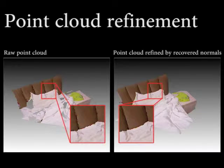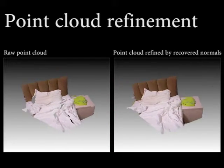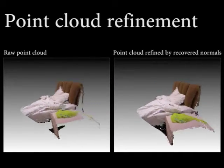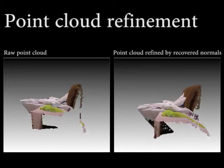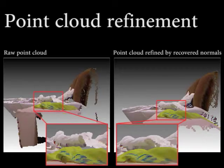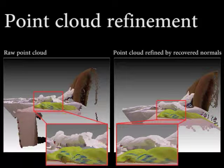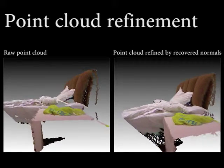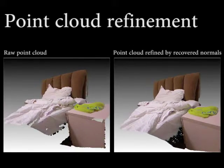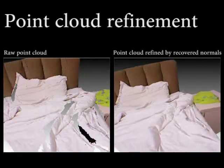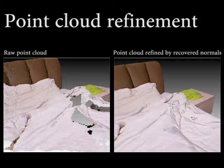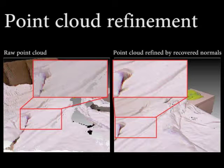For example, here we can see on the left, the points are in a rougher position compared to that on the right, where the edge and crease on the pillow can be clearly seen. Here we can also see improvement looking at the edge of the t-shirt and blanket and surface. Here the hole is filled in and wrinkle details are much more clear.